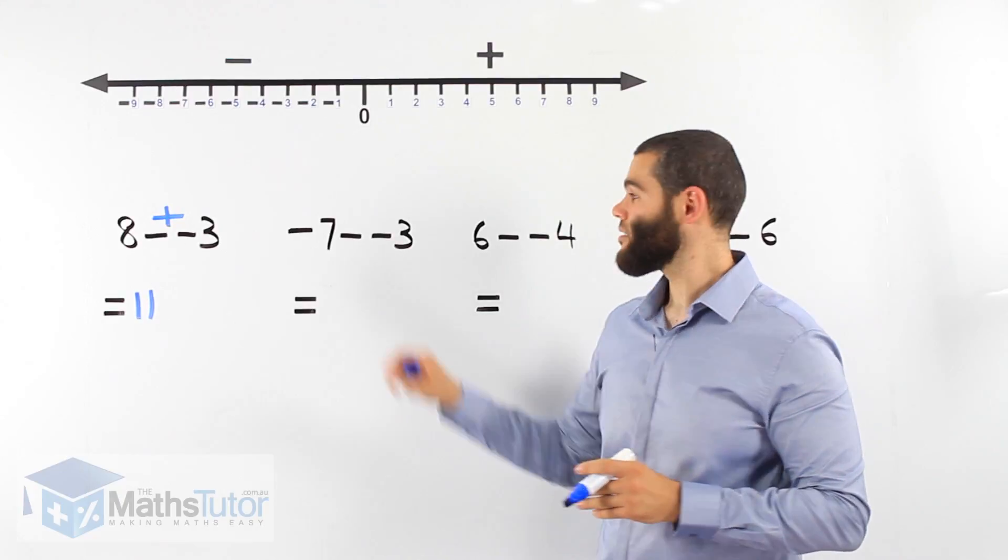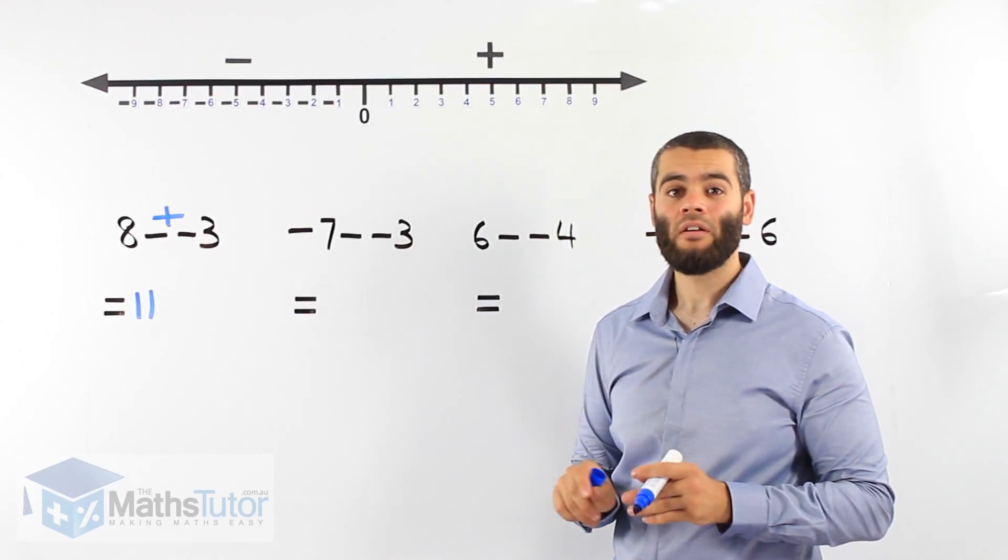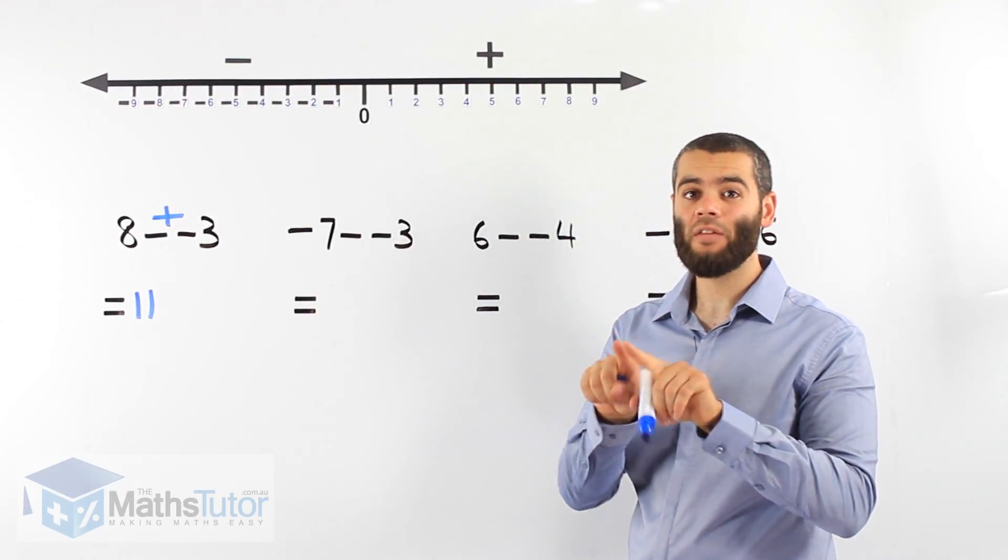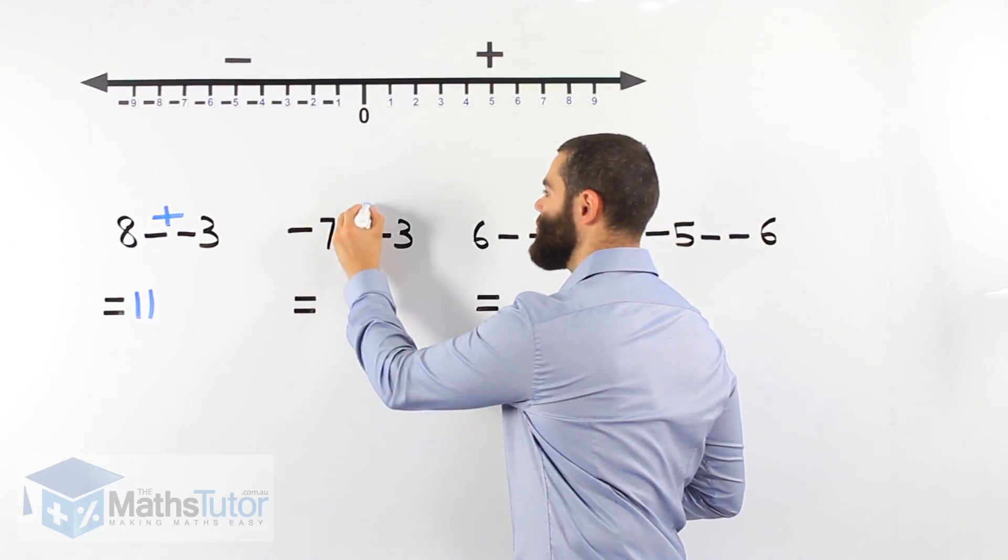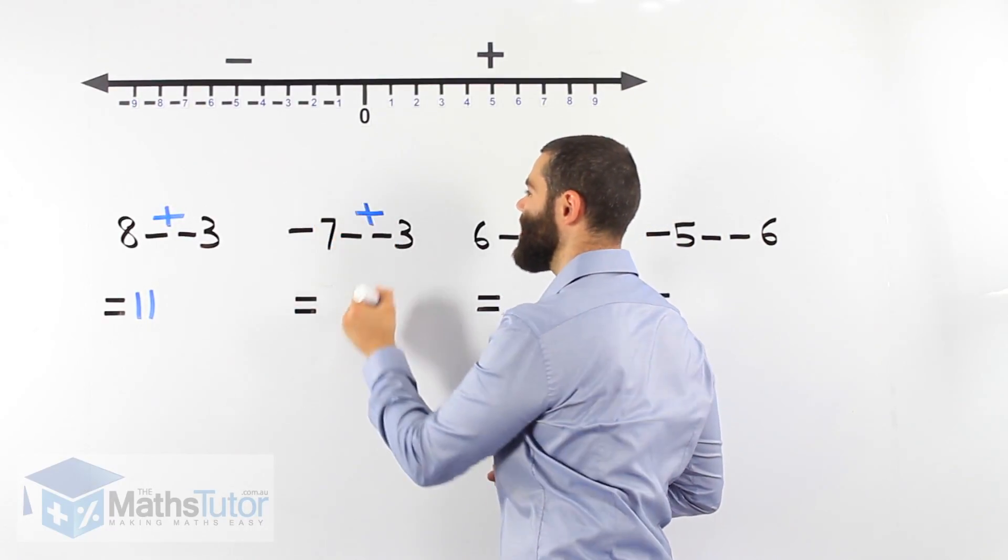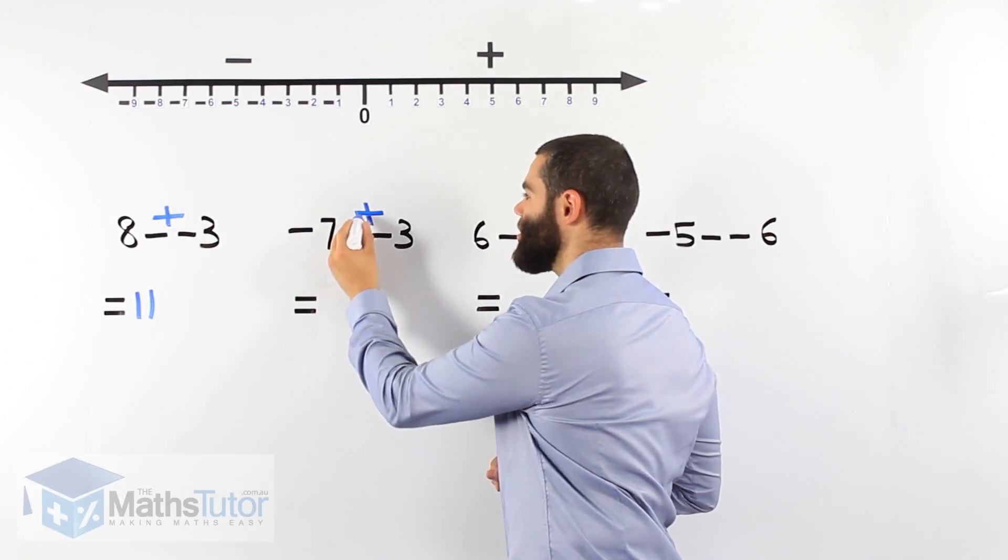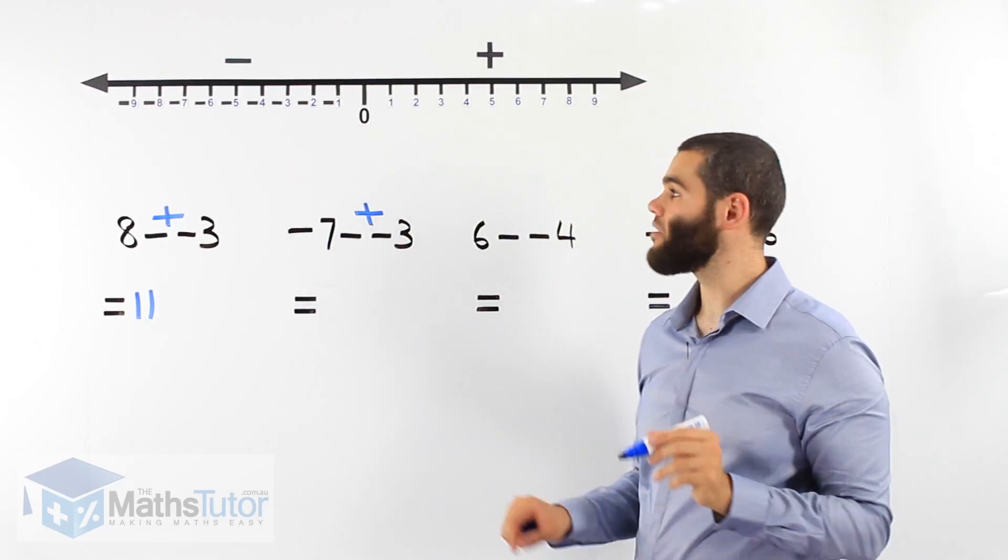Negative 7 minus negative 3. Again we have two negatives side by side right next to each other. They join forces and become a plus. Negative 7 plus 3. We can use the number line.